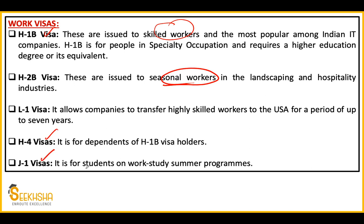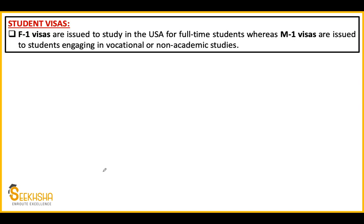J-1 visas are for those who go to work-study summer programs in the USA. F-1 visa is issued to full-time students. M-1 visa is issued for vocational or non-academic studies. So if you have a brief idea of F-1 and M-1 visas, you can easily solve the question. Now let's look at the third question.